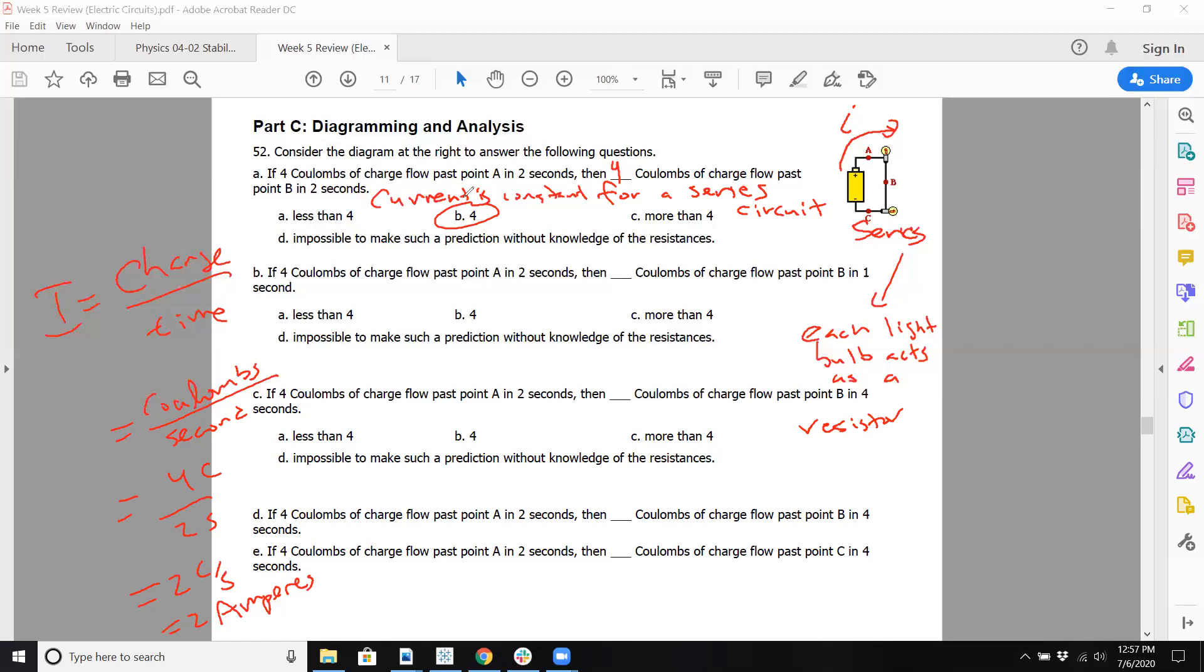You want to maintain the same ratio. If four coulombs charge flow past point A in two seconds, then two coulombs will flow past point B in one second. You want the ratio of coulombs per time to be the same. For four coulombs in two seconds, the answer is eight coulombs for four seconds. And for point C, same thing. Hopefully that all makes sense.